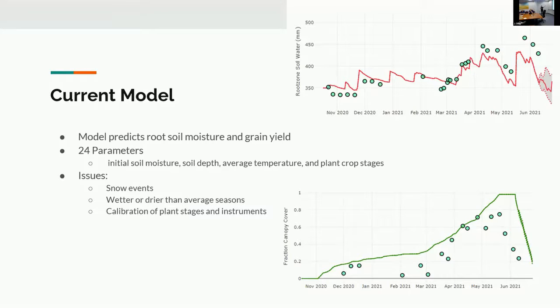These are some graphs from the current model. Here you have the red line which is the predicted model, and where it turns into the gray dashed lines, that's the forecast. Then you have those green dots that are the observations. The model predicts various things including the root zone soil moisture and canopy cover, which can be used to predict grain yields.